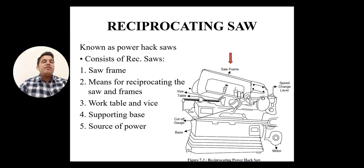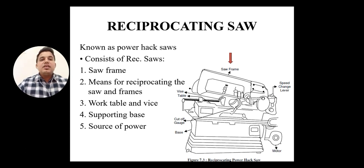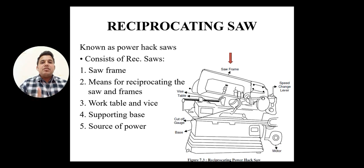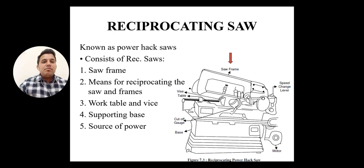The reciprocating saw, also known as the power hacksaw, is a very powerful automatic sawing machine available in our workshop. It is particularly used for metal cutting purposes, as well as different other materials. We can cut bar stock, I-sections, C-sections, or any metallic sheet.